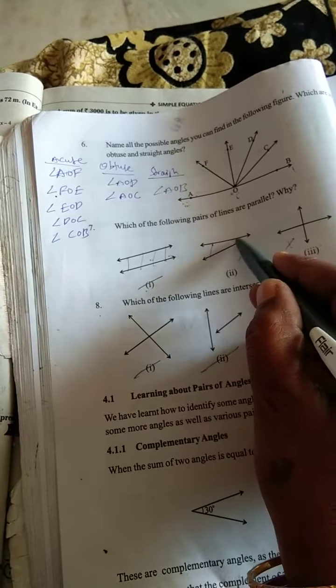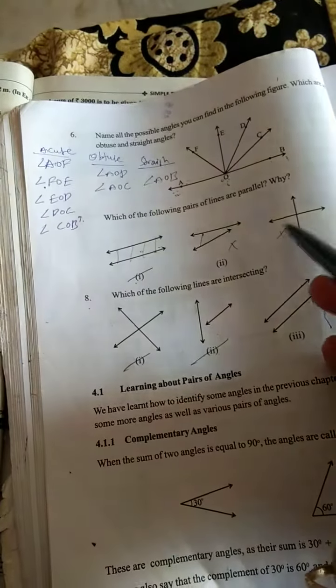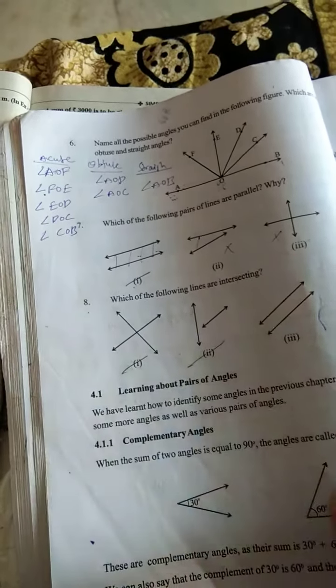Parallel line means the distance between two lines at any point on the two lines will be the same distance. Here some distance is there, here small distance is there. So these are not parallel lines. These are perpendicular, not parallel. So first one is the correct.